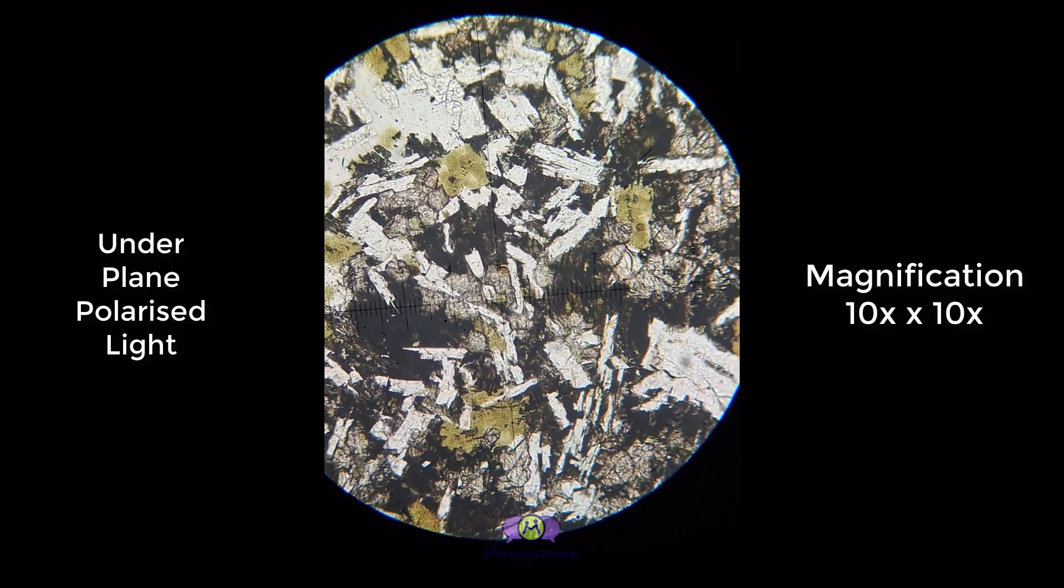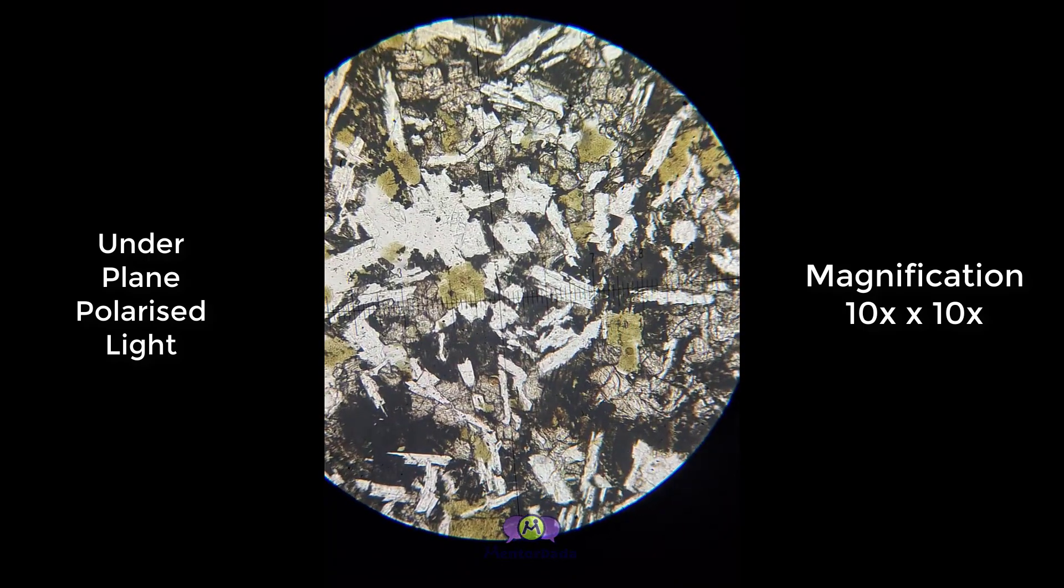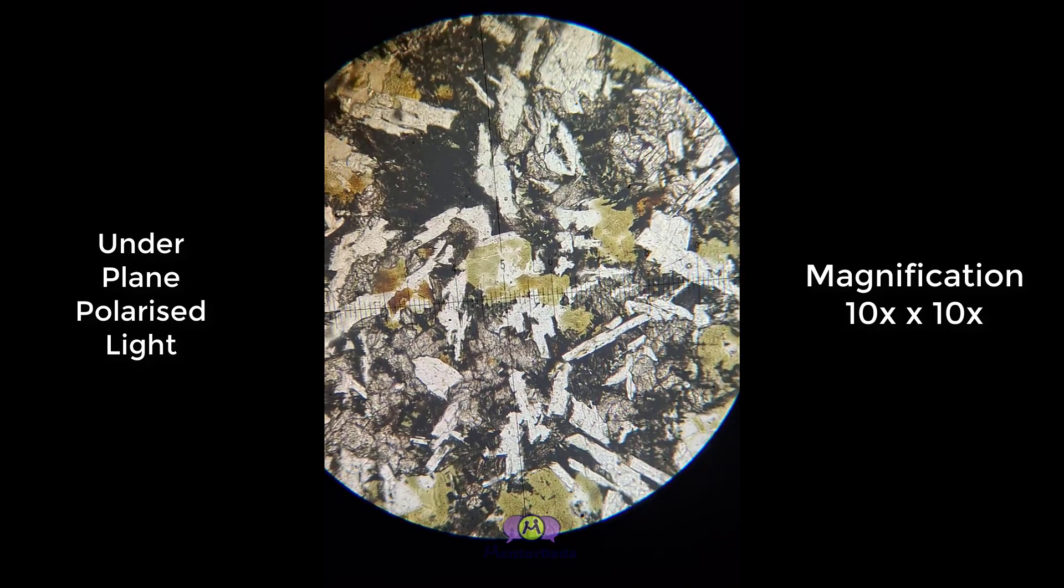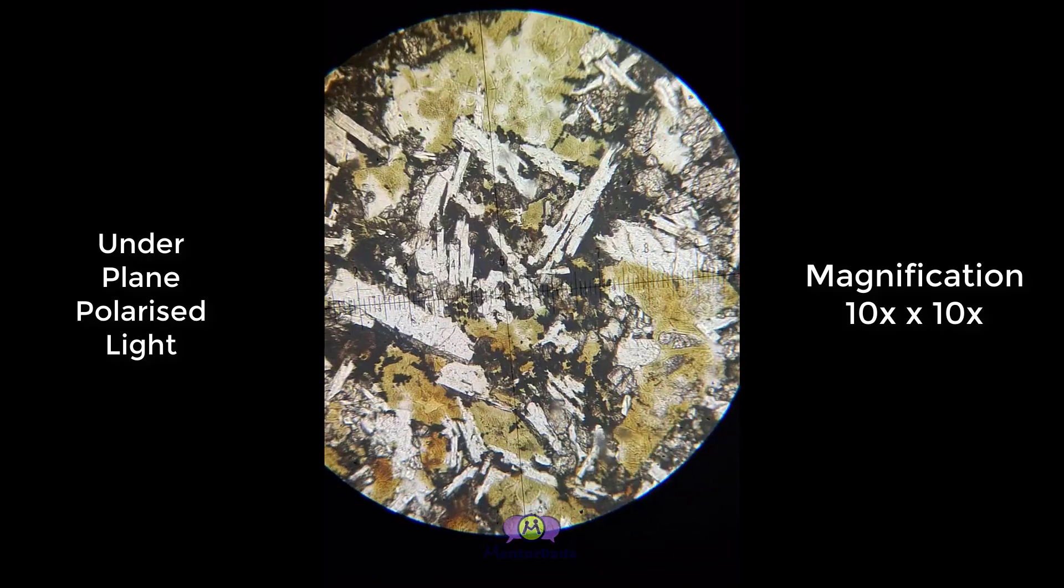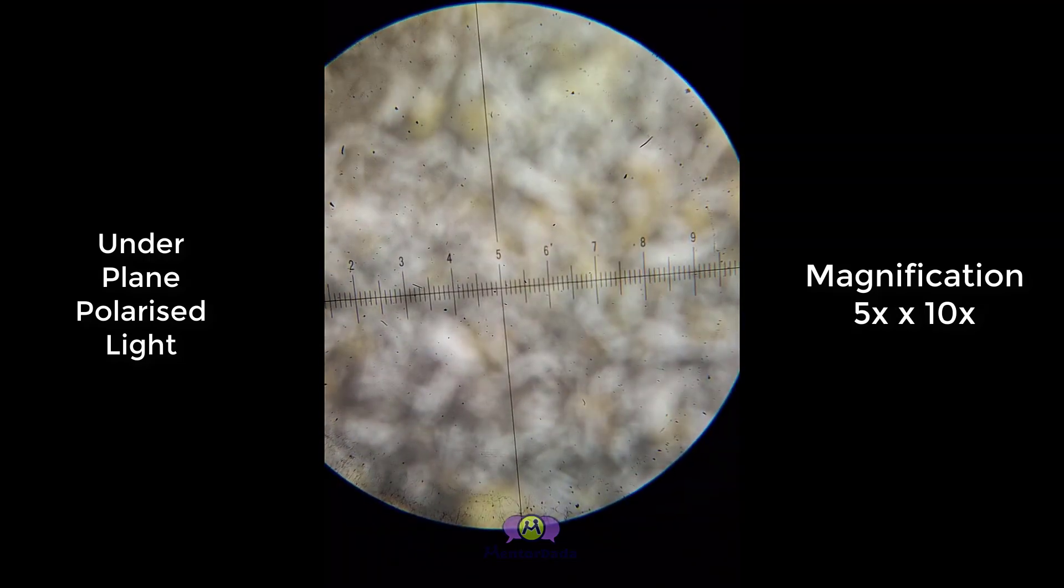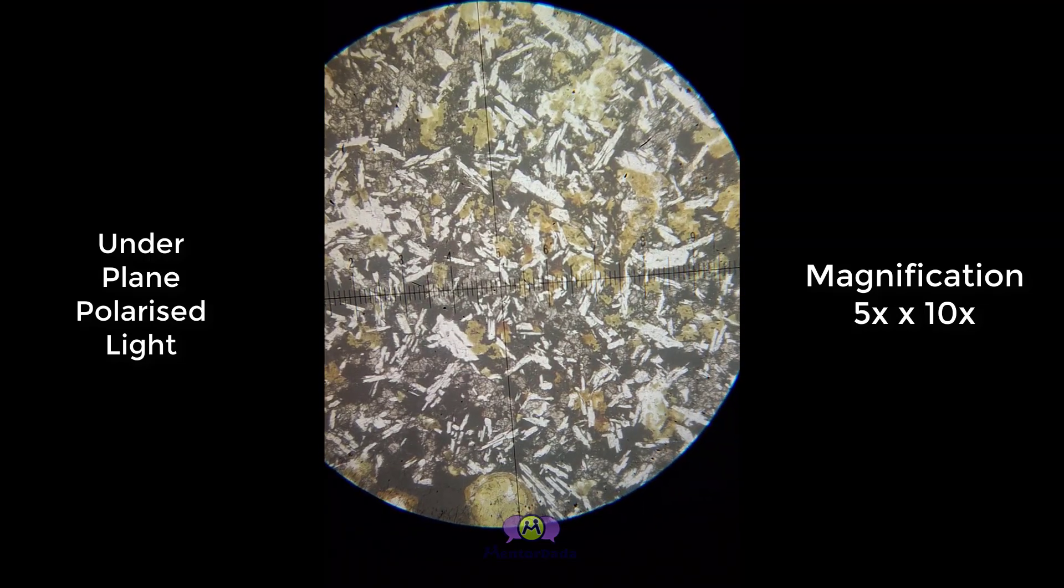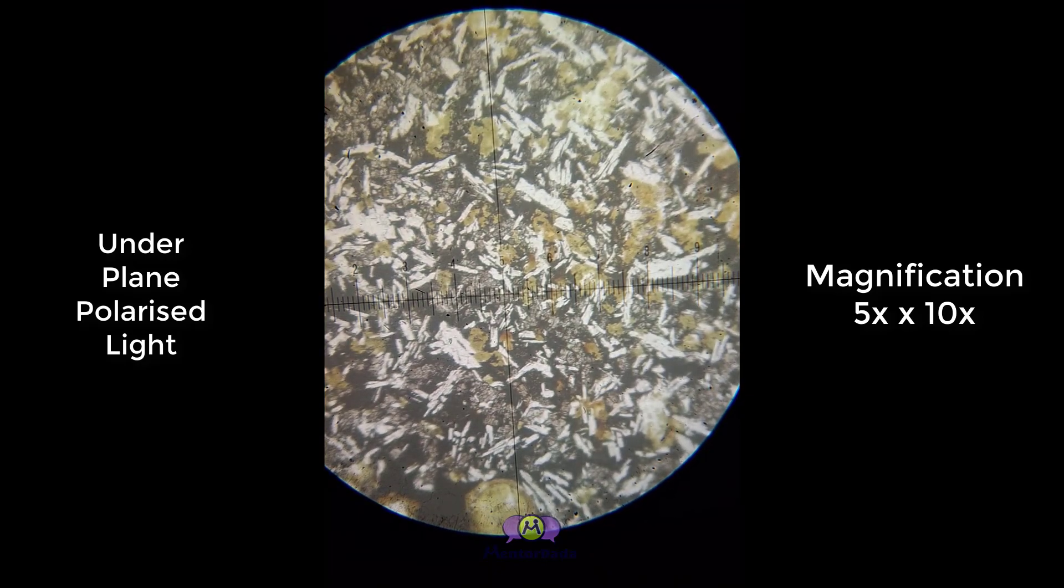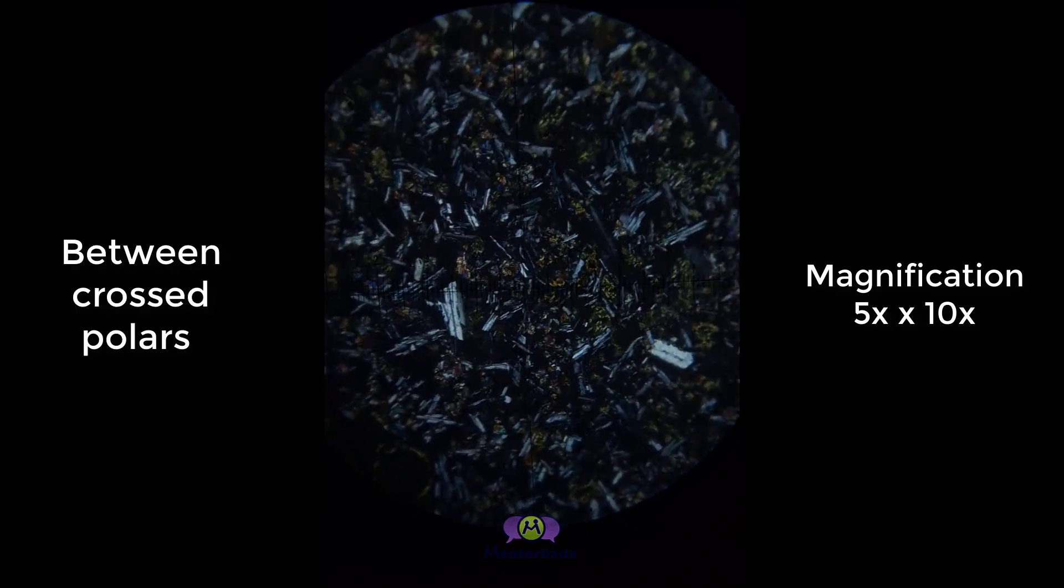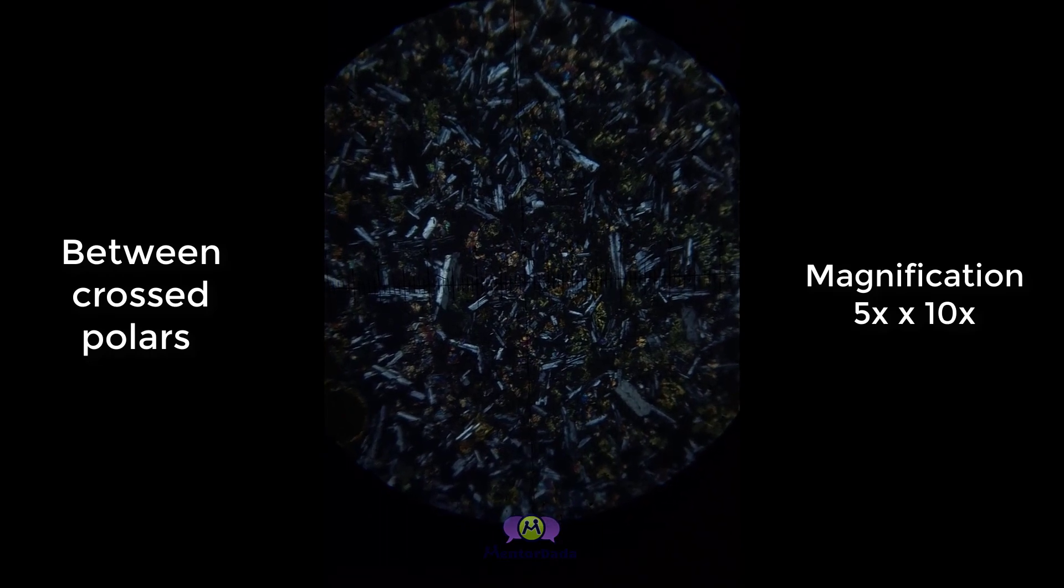The white colored laths are plagioclase and the green patches are glassy material. The name of this rock is basalt.